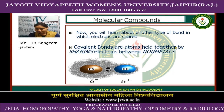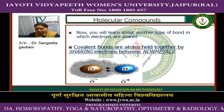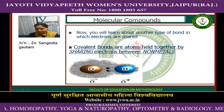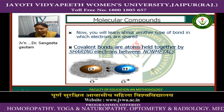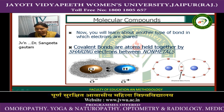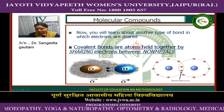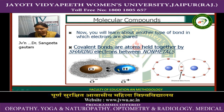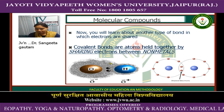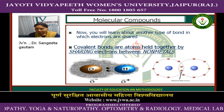Covalent bonds are atoms held together by sharing electrons between non-metals. We discussed earlier that ionic bonds are formed between metals and non-metals, but covalent bonds are formed between non-metals only. You can see pictures where O and H are joined together to form a covalent bond, where hydrogen shares one electron and oxygen also shares one electron, showing the sharing of electrons.